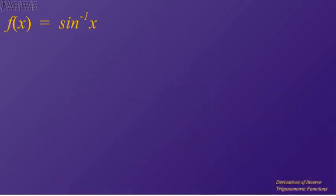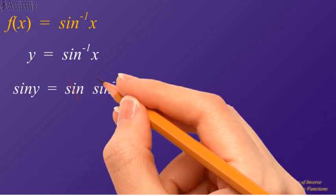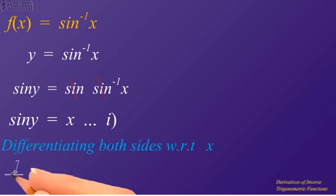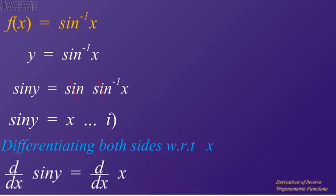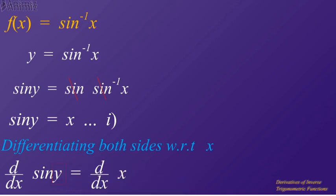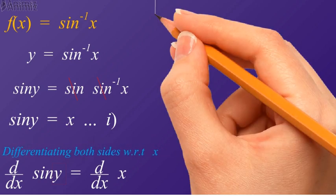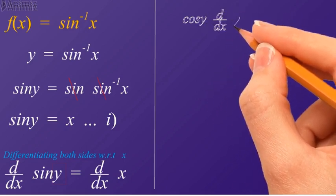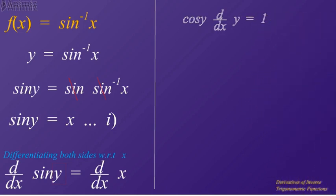Let's come to the derivative of these functions. When f(x) is equal to sine inverse x, in place of f(x) we can write y is equal to sine inverse x. Applying sine on both sides of the equation, we get sine y is equal to x. Differentiating both sides with respect to x, that is d/dx of sine y is equal to d/dx of x. We are going to differentiate the sine function with respect to x, but it has y as its parameter. Therefore, according to the rules of derivatives, we write the derivative of the sine function, and in multiplication we write the derivative of y with respect to x. Therefore, we write cosine y — which is the derivative of sine y — and d/dx of y, which is equal to 1, since the derivative of x with respect to x is equal to 1.